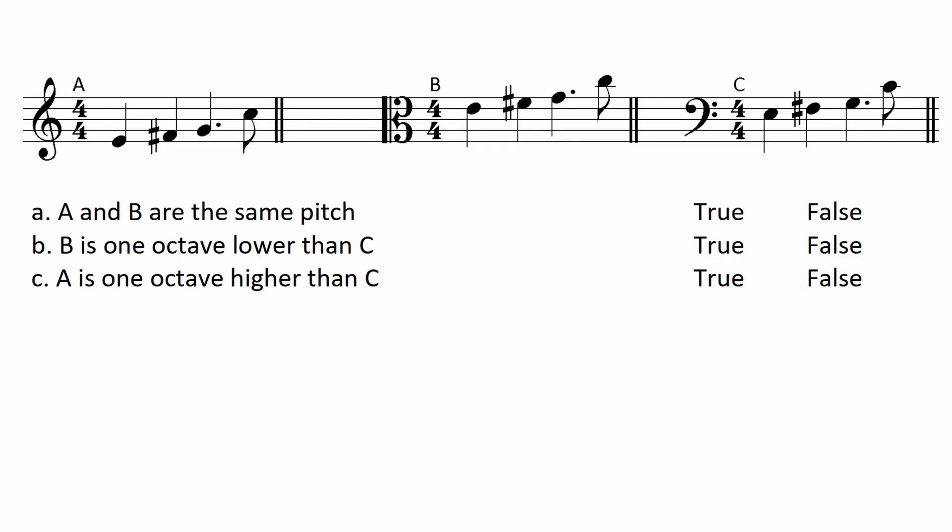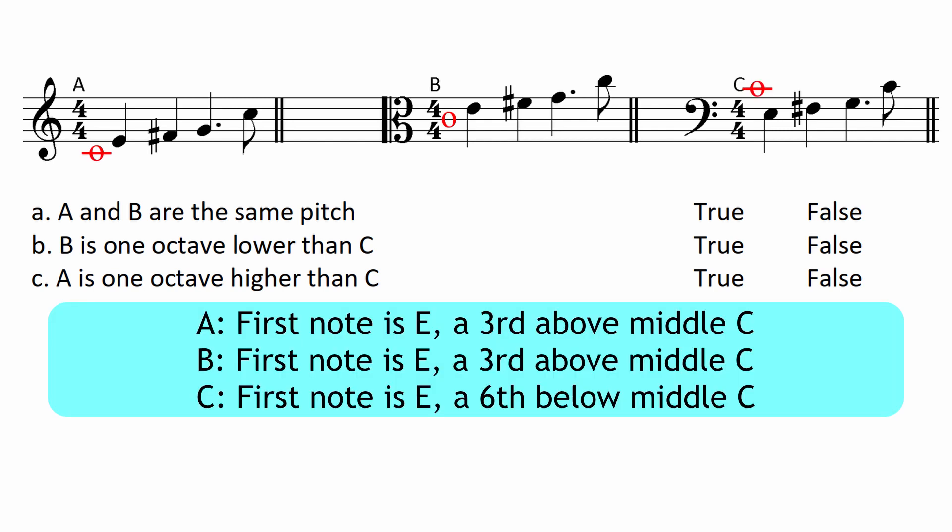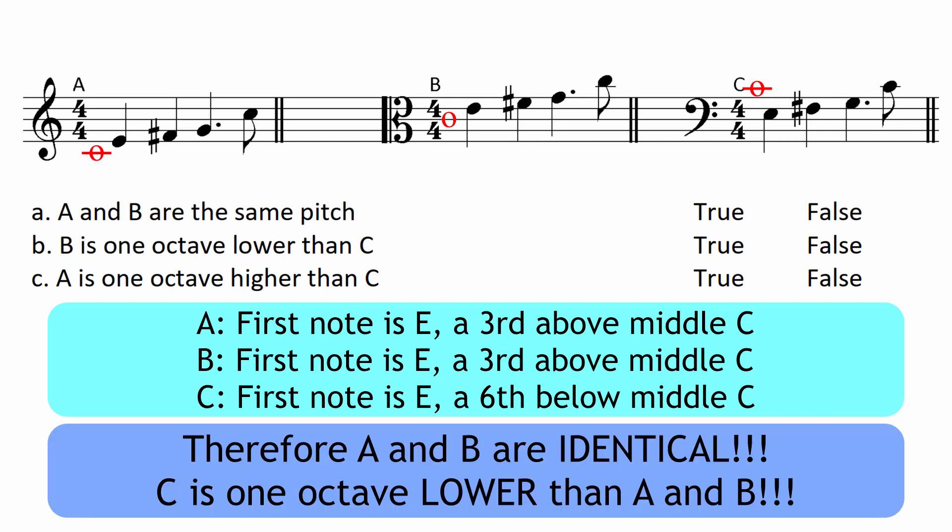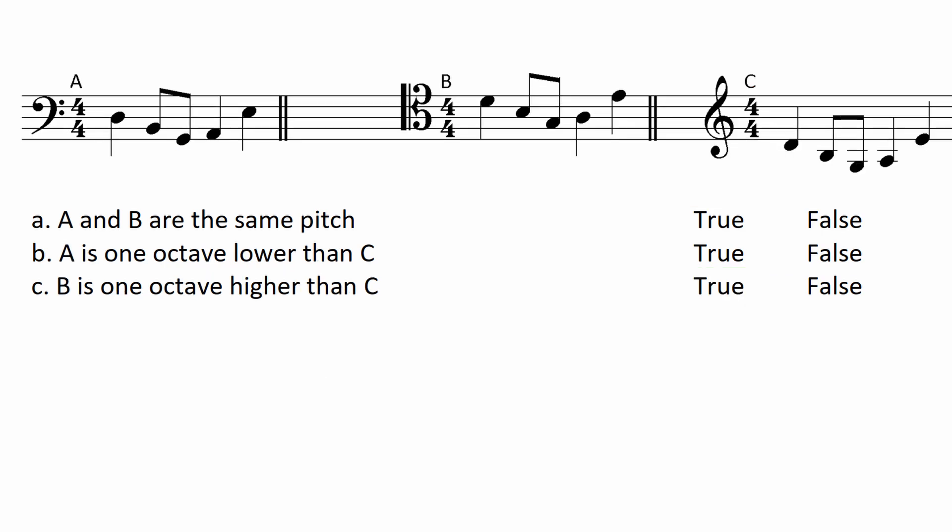Look at these true or false questions. Where are the notes in relation to middle C? A and B have their first note a third above middle C so they're identical in pitch. C has its first note a sixth below middle C so it's an octave below A and B. Pause the video and look at this one. See if you can work it out.